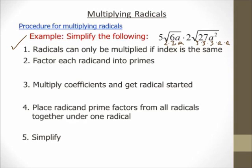So I'm going to end up with 5 times 2 is 10, and now I have a radical. Step number four says place the radicand prime factors from all the radicals under one radical. So I'm going to put everything under one radical. At the beginning I have 2 times 3 times a, and then I have a bunch of 3s and a's from the second radical. I'm going to put it all under the same radical, and I want to group everything into groups since it's easier to find things to circle.